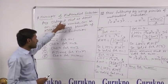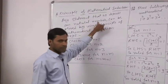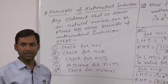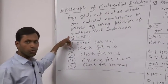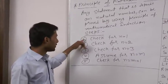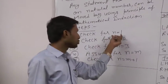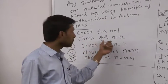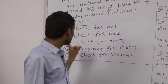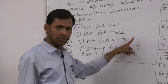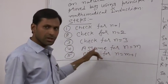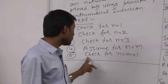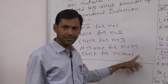Any statement that depends on a natural number can be proved by using the Principle of Mathematical Induction. For this, we have to follow 5 steps. In step 1, we check the statement for natural number 1. Then in step 2, we check it for natural number 2. Then step 3, we check it for 3. In step 4, we assume it is valid for n equal to m. Then we prove it for n equal to m plus 1.